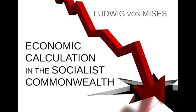Section 2: The Nature of Economic Calculation. Every man who in the course of economic life takes a choice between the satisfaction of one need as against another, eo ipso, makes a judgment of value. Such judgments of value at once include only the very satisfaction of the need itself, and from this they reflect back upon the goods of a lower and then further upon goods of a higher order.